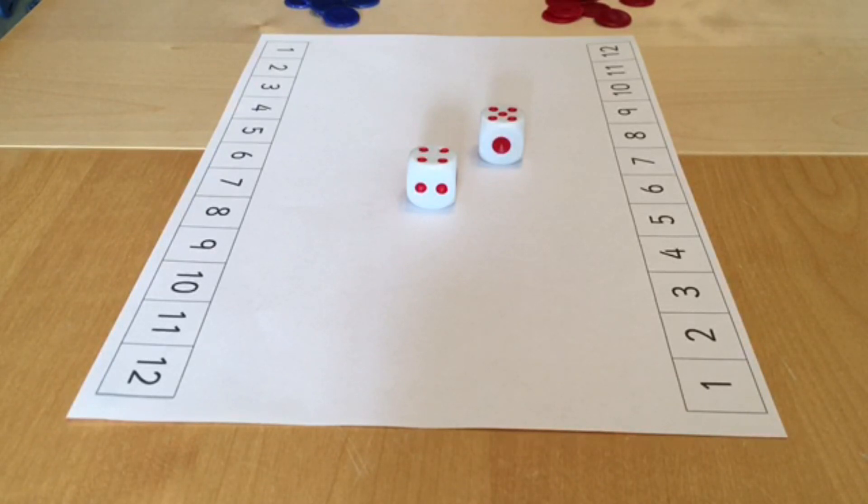For the final version of the game we use the same rules as last time, so if player one had rolled a five and a four we can add the dots together to cover nine or we can subtract the dots from each other to cover one. But we introduce a new rule where we're allowed to multiply the quantities on the dice together.